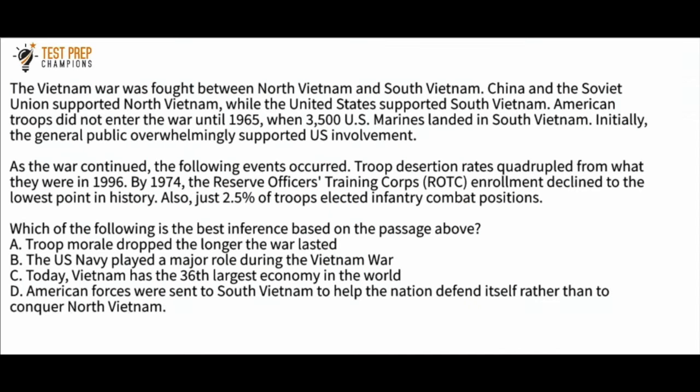The Vietnam War was fought between North Vietnam and South Vietnam. China and the Soviet Union supported North Vietnam, while the United States supported South Vietnam. American troops did not enter the war until 1965, when 3,500 U.S. Marines landed in South Vietnam. Initially, the general public overwhelmingly supported U.S. involvement. As the war continued: troop desertion rates quadrupled from 1966; by 1974, ROTC enrollment declined to the lowest point in history; and just 2.5% of troops elected infantry combat positions.